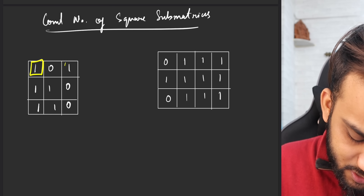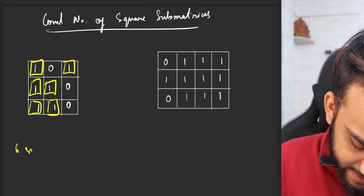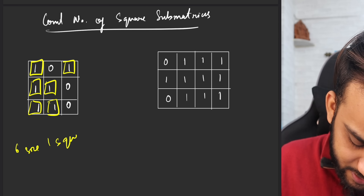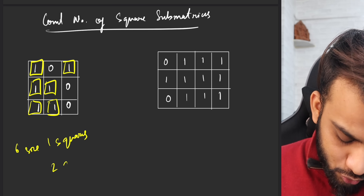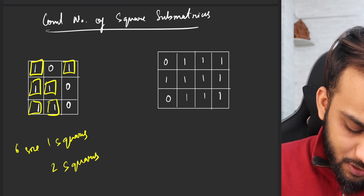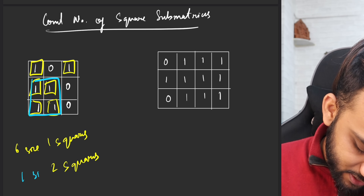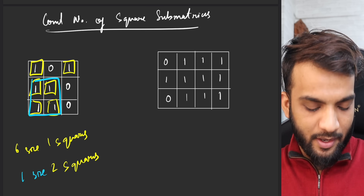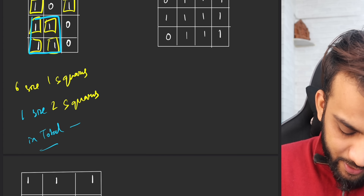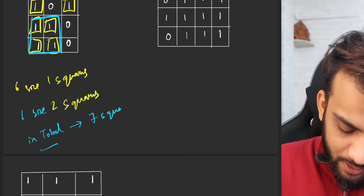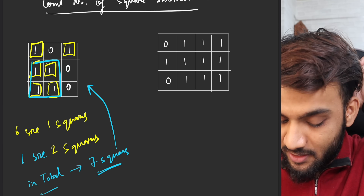For the first example, I can say there are six size-one squares. How many size-two squares are there? I can see just one size-two square. Do I have a size-three square? The answer is no. So in total I have seven squares in this particular N×M matrix.